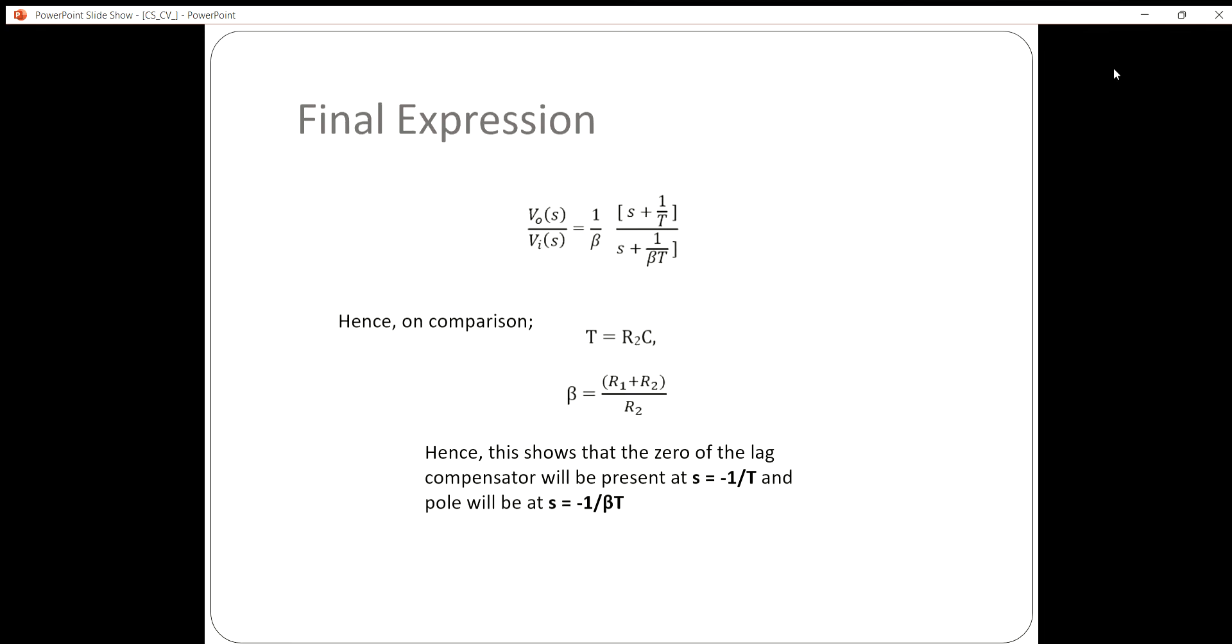We get the final expression as V_out(s)/V_in(s) = (1/β) × [(s + 1/τ) / (s + 1/(βτ))]. Hence, on comparison, we get τ = R2 × C and β = (R1 + R2) / R2.